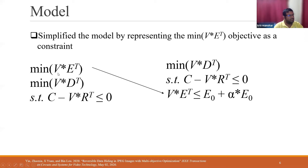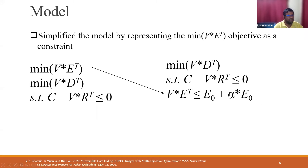To simplify the computations, they modeled file size expansion as a constraint rather than an objective. Essentially they limit how much bigger the output image can be — it shouldn't be twice as big, perhaps 1.5 times or just a few kilobytes. That's a parameter you define. Combined with the requirement to have enough embedding space for the desired message, this reduces to minimizing distortion as the single objective.